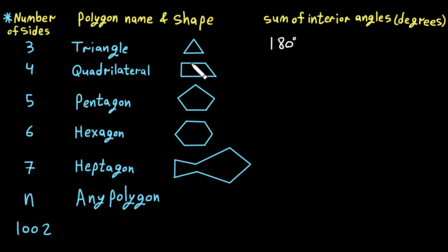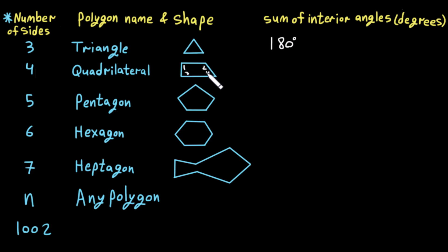If we have four sides we call it a quadrilateral — there are many types like squares and rectangles. How can we calculate the sum of interior angles of this shape with four sides? The sum of interior angles of a quadrilateral can be found by splitting it into two triangles.